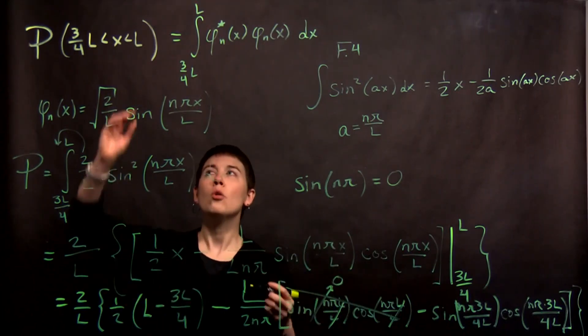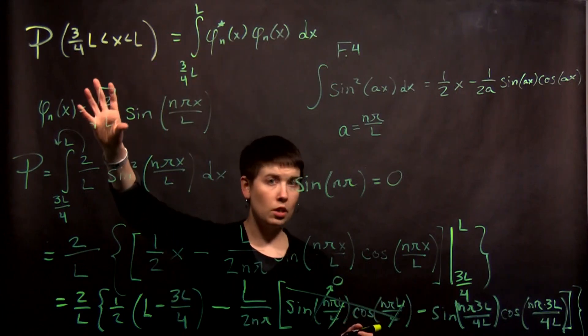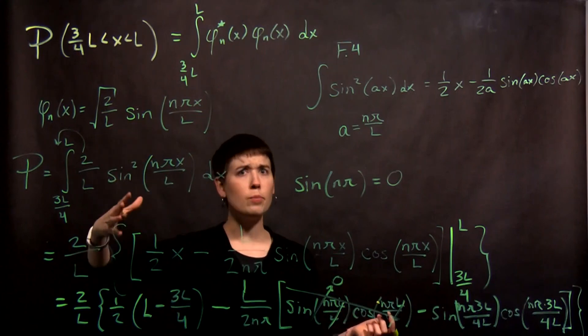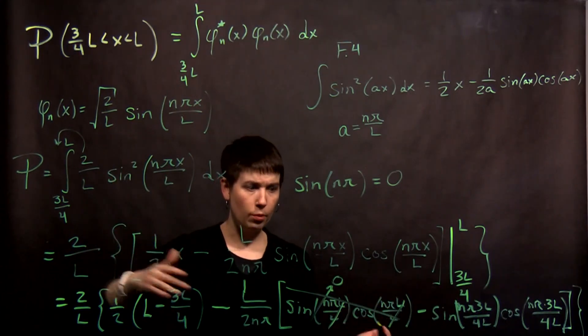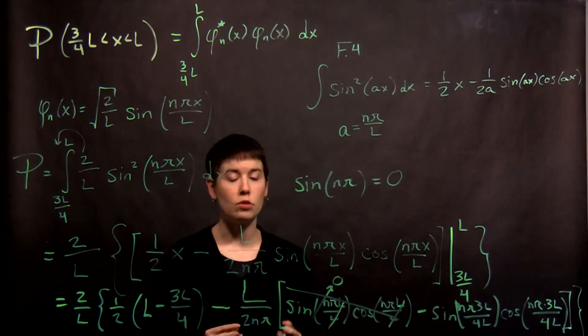So I'll stop there. But the key here is understanding when you have a probability question, you have to set up that integral, specifically have whatever the state is that you're dealing with. And then really use those tables of integrals to get to the next step, do some simplification, and then in this case go a little bit farther once we know a specific value of n.